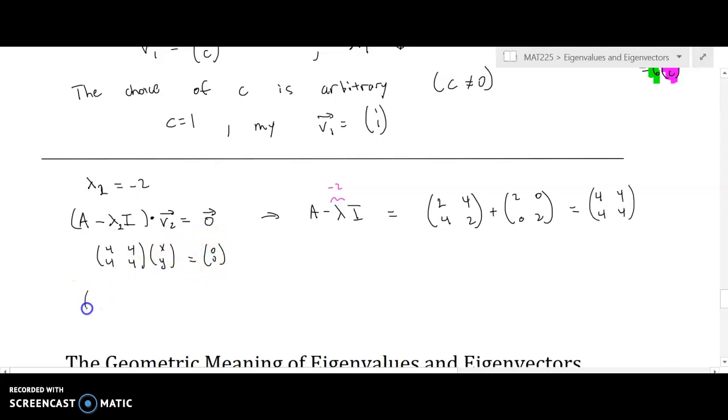And so we form our Gaussian matrix, [[4, 4, 0], [4, 4, 0]]. And now we are going to reduce this, reduce row echelon form on this guy. And it's going to produce [[1, 1, 0], [0, 0, 0]].